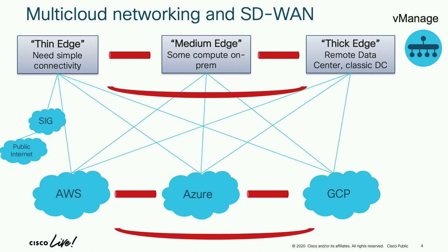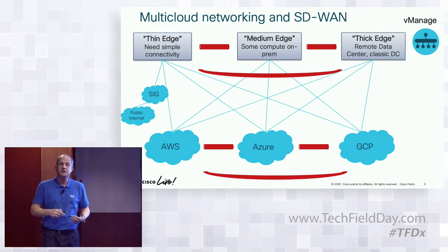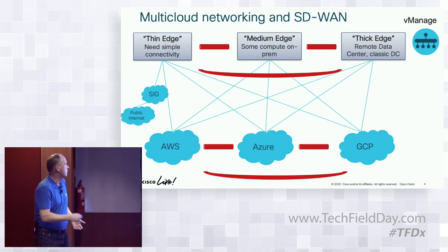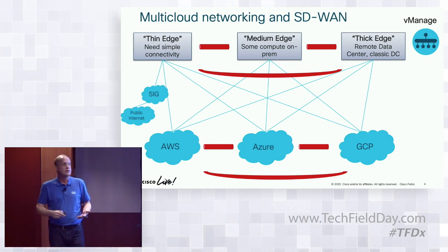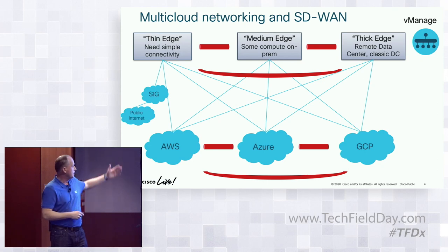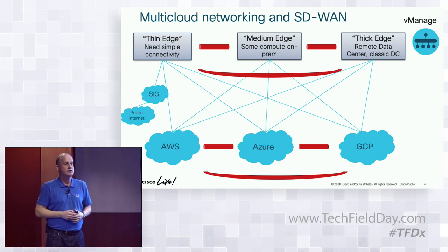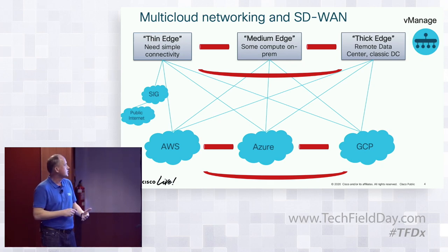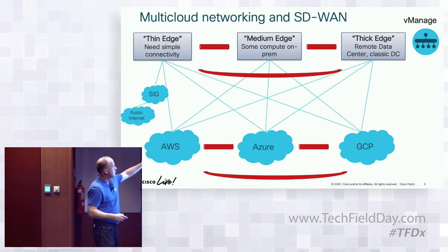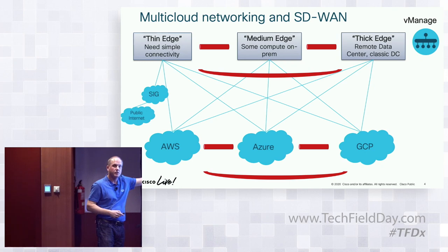On the left side: security, internet gateway, public internet. If it's a small branch, you need direct internet access and you need to secure your DIA. If you go to the cloud, the next logical step is to move your firewall to the cloud — that can be Umbrella, Zscaler, or any secure internet gateway, SIG. You need it to secure your internet breakout. And you'll also need firewalls on the public cloud side. In a nutshell: two parts — securing public internet access, and then running the firewall with your SD-WAN edge virtual router on the cloud.